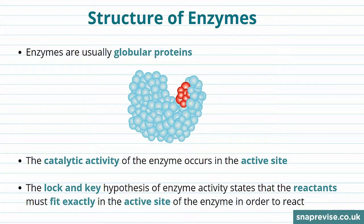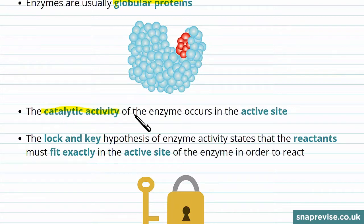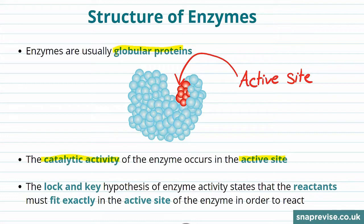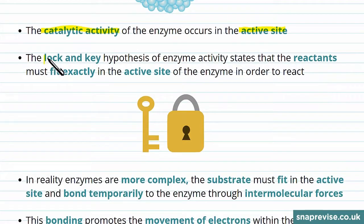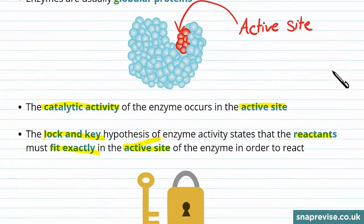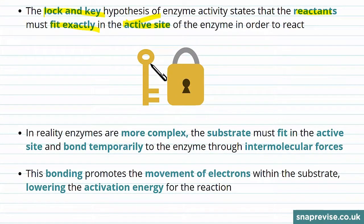We've talked about enzymes as catalysts, but physically what are enzymes? Enzymes are usually globular proteins, which means they're clusters of protein molecules. The catalytic activity of the enzyme occurs at the active site — shown at the top in the diagram here — where the enzyme interacts with the chemicals in the reaction it's speeding up. The lock and key hypothesis of enzyme activity says that the reactants must fit exactly into the active site, like a key fitting into a lock.